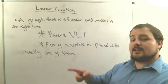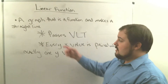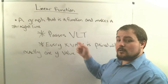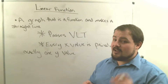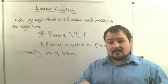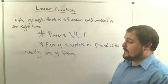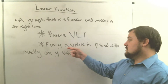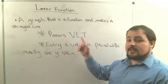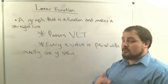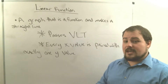A linear function does two things. First, it passes a vertical line test — when graphed, you can only draw a straight up-and-down line and hit one point on the graph. If it hits two points, it's not a function. Second, in a table of values, every x-value must be paired with exactly one y-value. If both conditions are satisfied, it's a function.